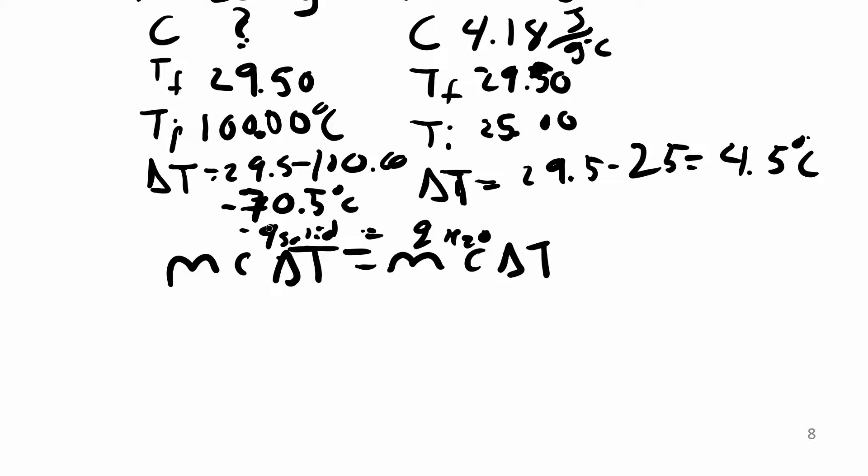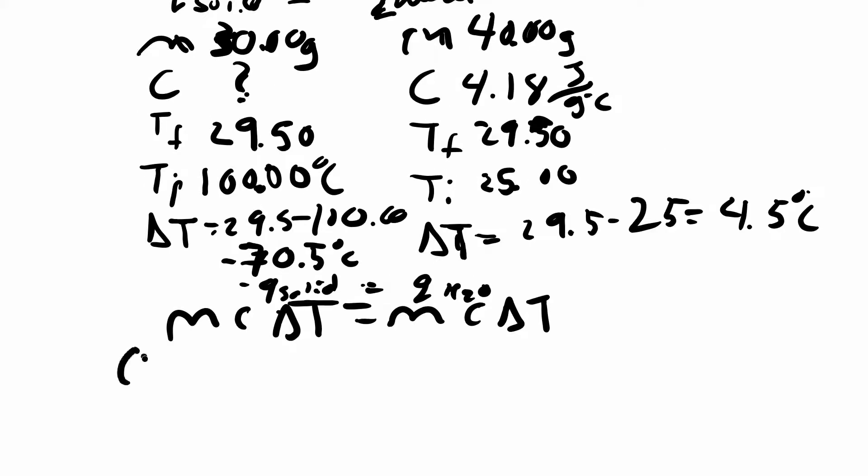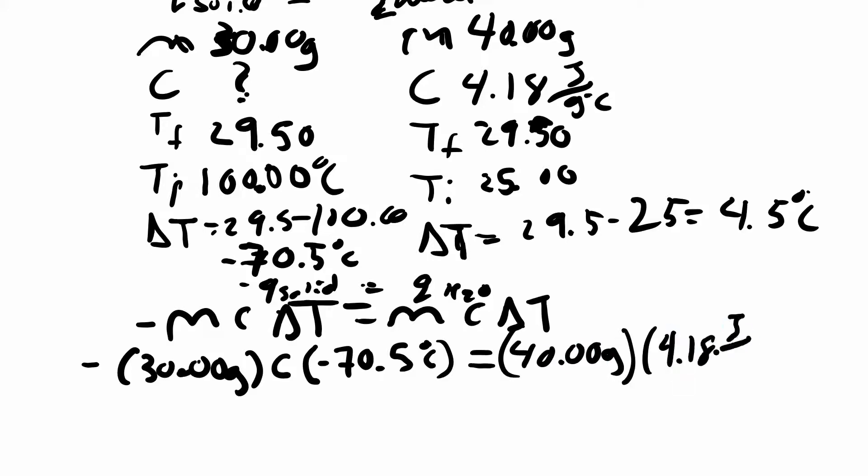The mass of the solid—I'm going to fill in my numbers here. I have 30 grams. C is what I'm trying to find. My delta t is negative 70. I have a negative here, drop my negative—that's how my negatives cancel out. You shouldn't end up with a negative specific heat capacity. Over here I have 40 grams, my c is 4.18 in joules per gram degree c, and my delta t is 4.5 degrees celsius. You can see my grams cancel here, my celsius cancels here. On this side I can multiply all that through and I should get 752.4 joules.